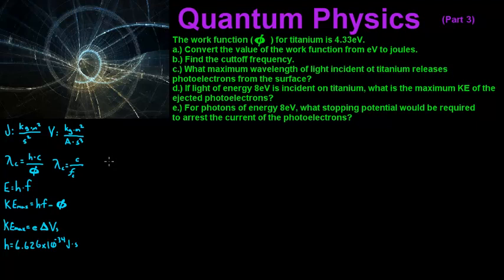Hi guys, today we're talking about quantum physics and this is part 3. In this problem we've got the work function phi for titanium, which is 4.33 electron volts. Part A: convert the value of the work function from electron volts to joules.